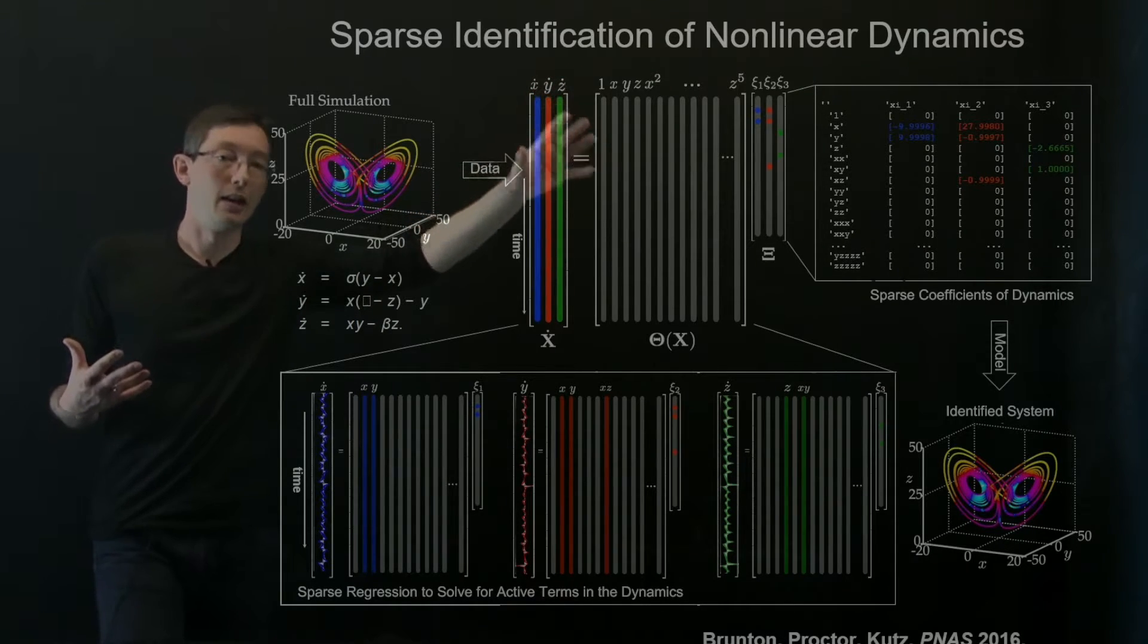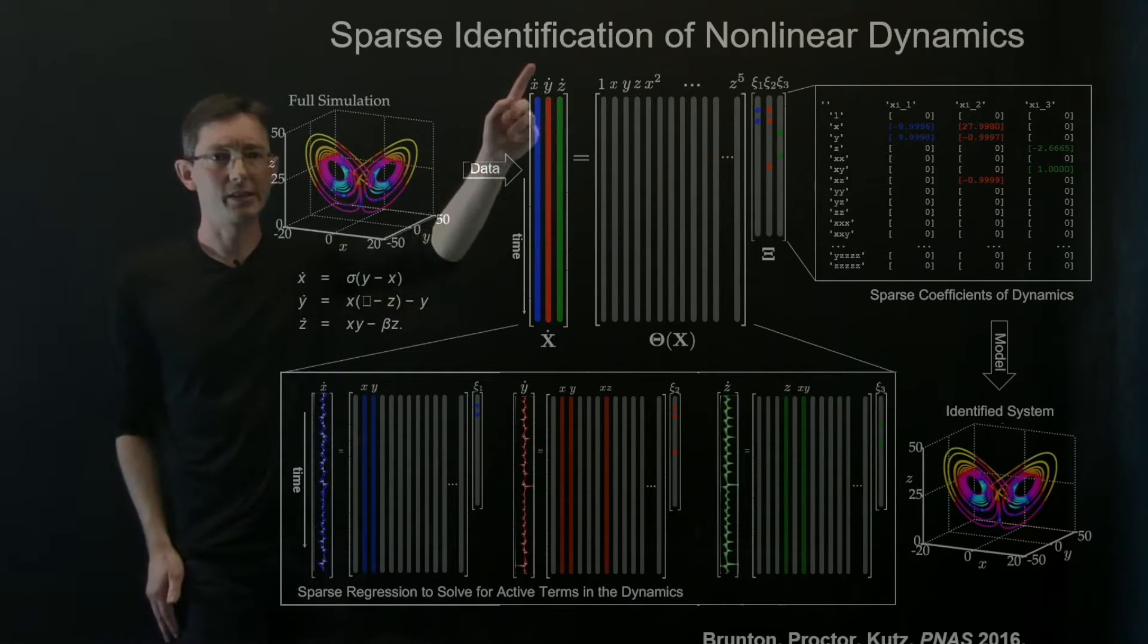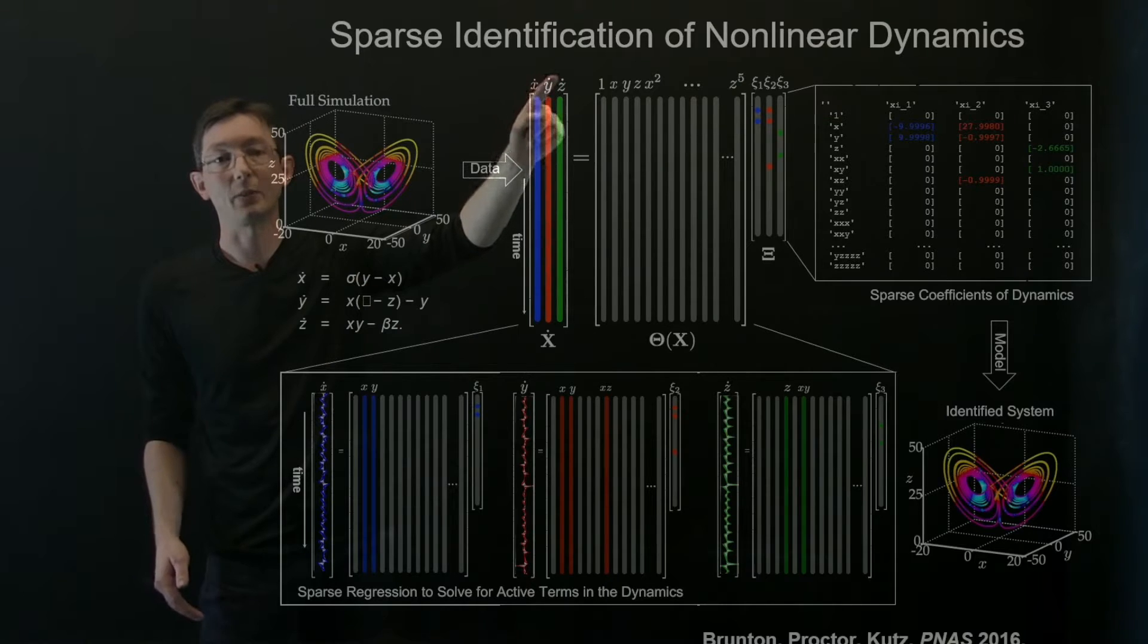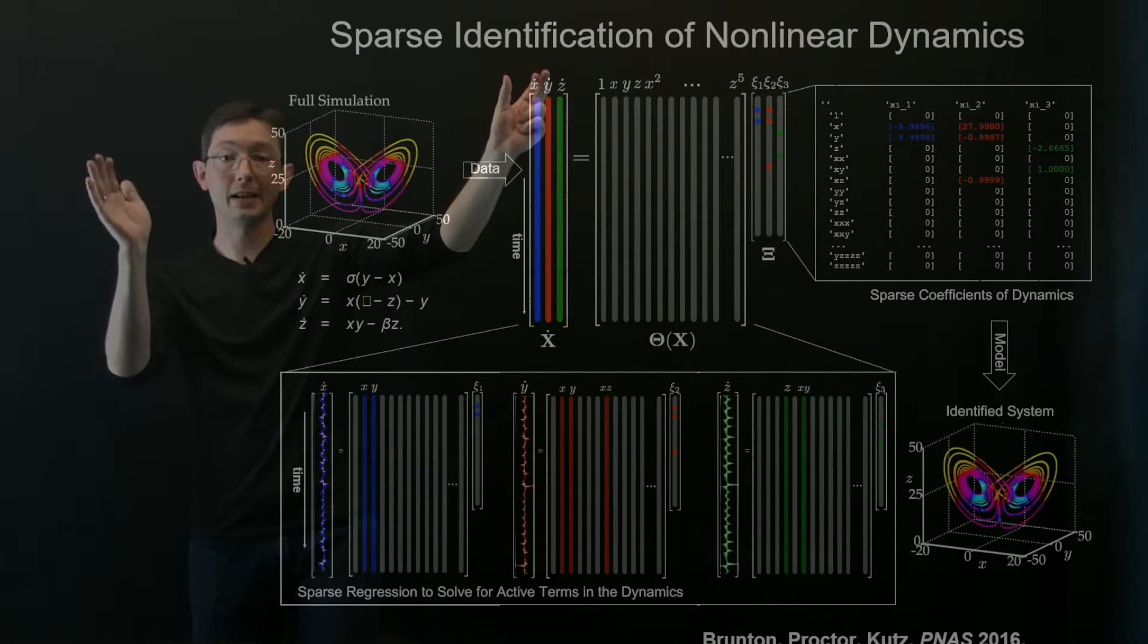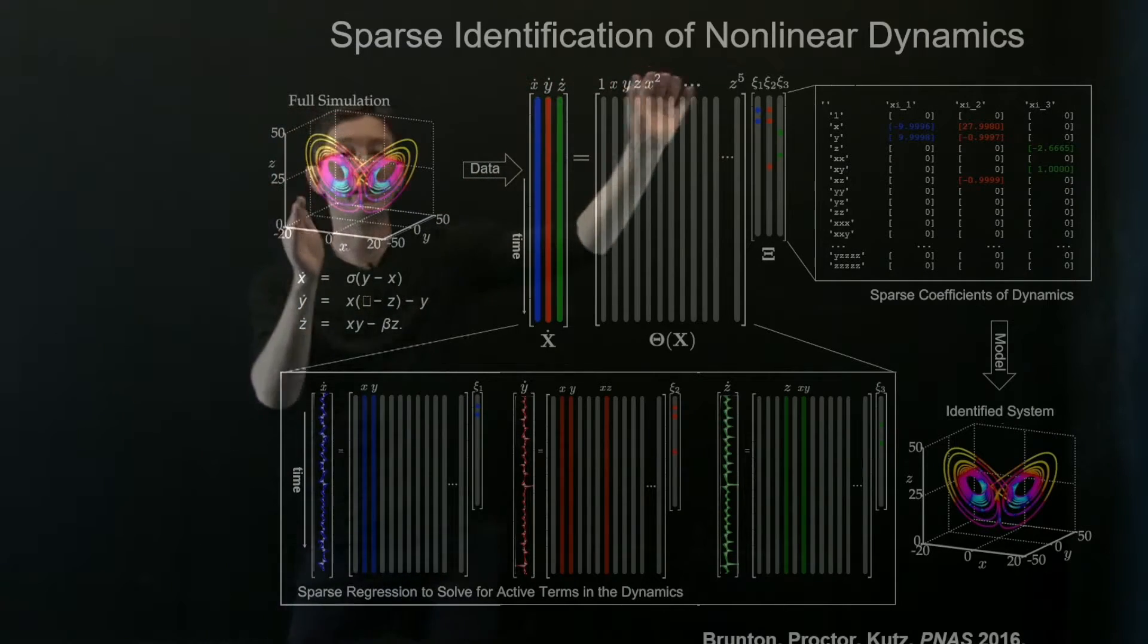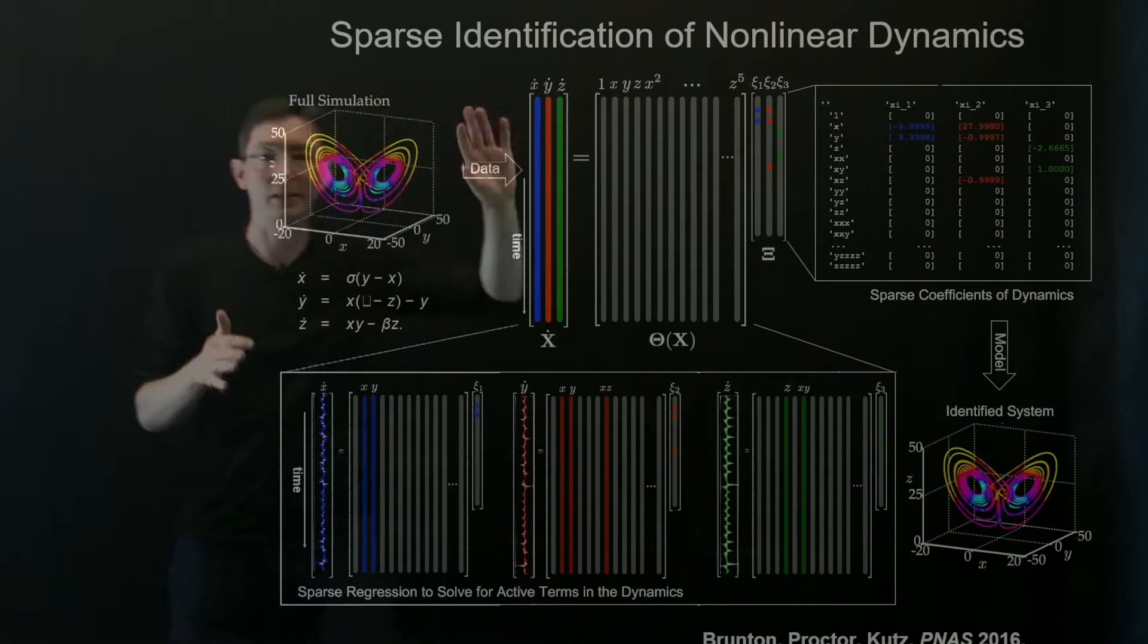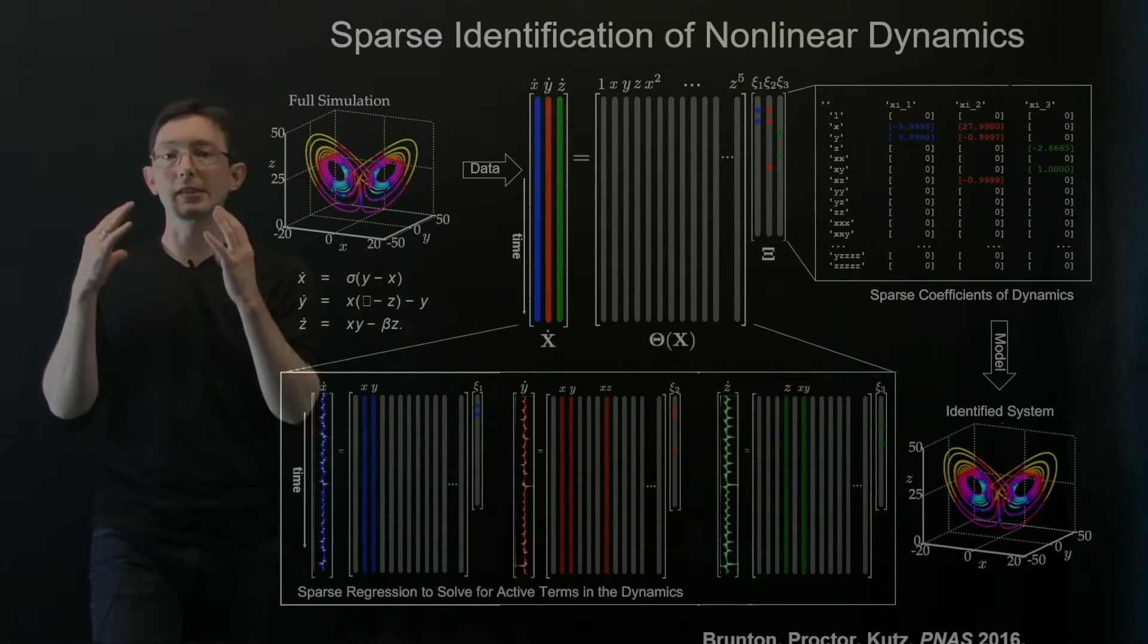Now a couple things of interest. You can definitely do this in discrete time too. This doesn't have to be x dot, y dot, z dot. This could be x, y, and z at time step k plus one as some nonlinear function of those variables at time step k. So you can do this in discrete time.